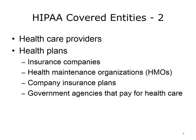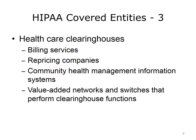The second category of covered entities that must follow HIPAA privacy and security rules is health plans. For HIPAA purposes, health plans include health insurance companies, health maintenance organizations or HMOs, company insurance plans, and government agencies that pay for health care. The third category of covered entities is health care clearinghouses, which are organizations that standardize health information. Examples include billing services, repricing companies that adjust prices based on insurance payments, and community health management information systems. Value-added networks and switches are also covered entities if they perform clearinghouse functions.